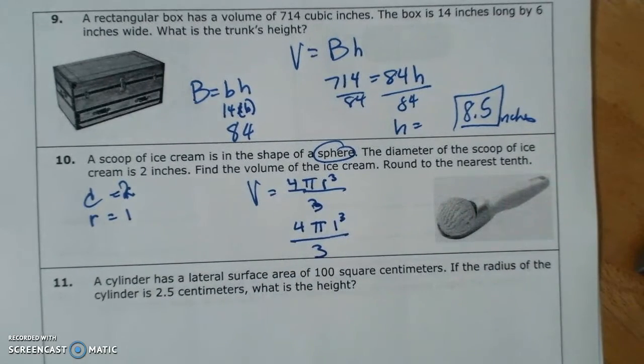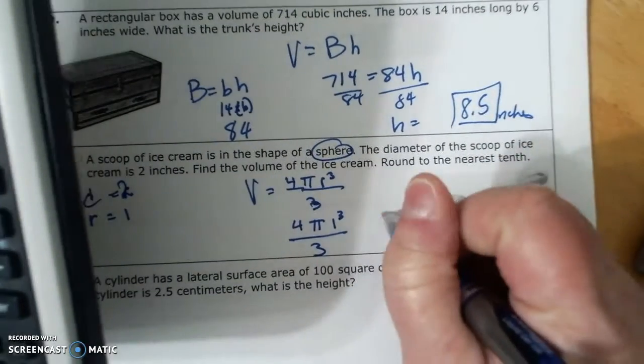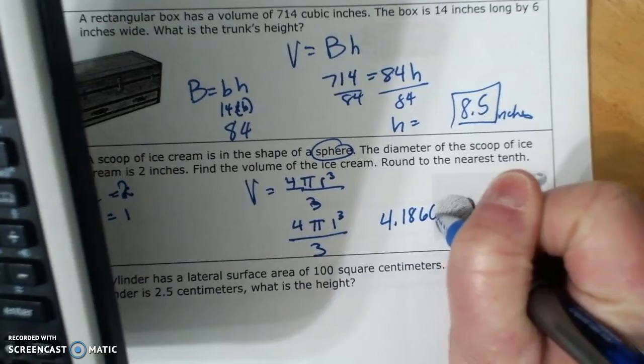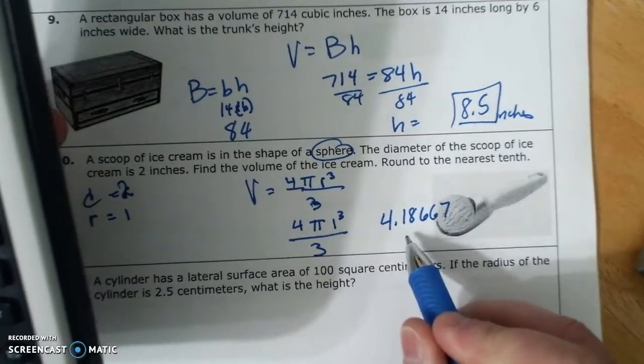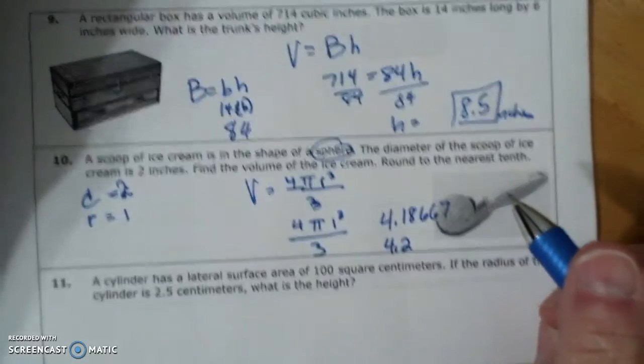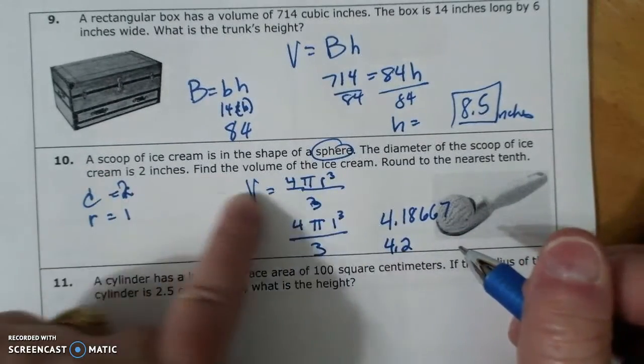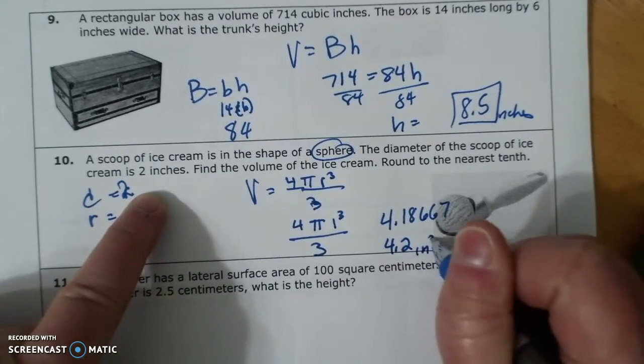So it's 4 times pi times 1 divided by 3. So 4 times 3.14 divided by 3 is 4.18667. To the tenth, 4.2. And we are looking for volume, so it is inches cubed.